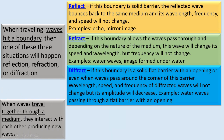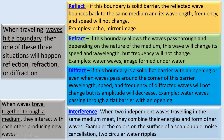When waves travel together through a medium, they interact with each other, producing new waves. This is called interference. Interference is when two independent waves traveling in the same medium meet — they combine their energy and form other waves. Examples include the colors on the surface of a soap bubble, noise cancellation for sound waves, or two circular water ripples interacting on a pool or pond.